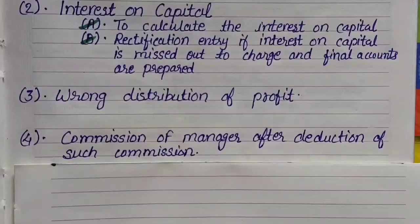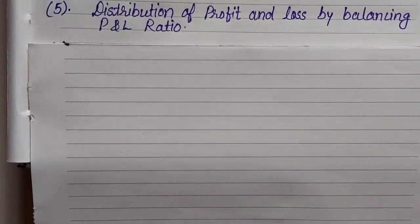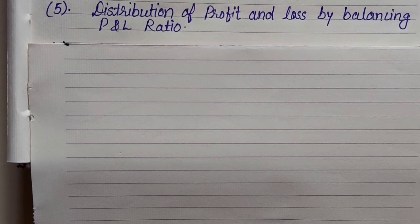The fourth method is Commission of Manager after deduction of such commission. Friends, when I teach you this method, I will explain it in detail at that time. The fifth method is Distribution of Profit and Loss by Balancing P&L Ratio — meaning you need to adjust or balance the Profit and Loss Ratio and then divide the Profit and Loss.